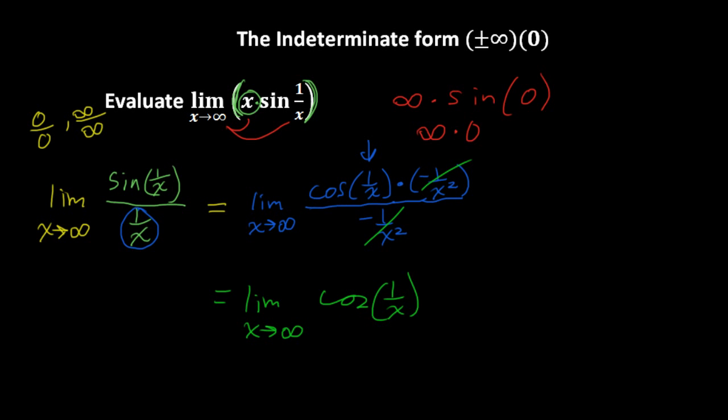Now if we try direct substitution, we do not have an indeterminate form. That's nice. What we would get is 1 over infinity is just 0, so what we have is cosine of 0, or that's just 1.